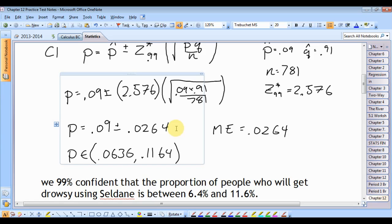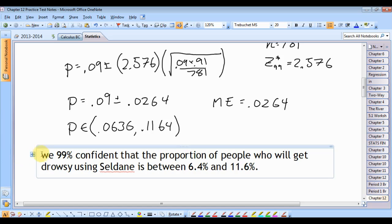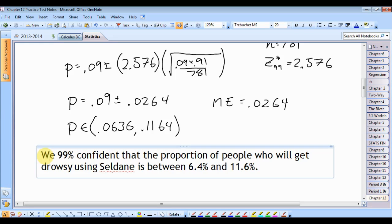Calculate. Notice we're calculating that with the margin of error. And then we're writing that as an interval. Okay. A little interpretation never hurt anyone. We're 99% confident that the proportion of people who will get drowsy using Seldane is between 6.4 and 11.6%. That's not that many people, right?